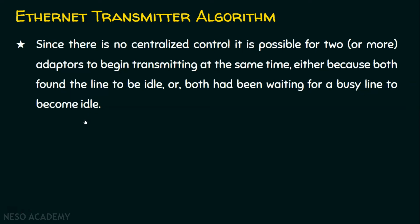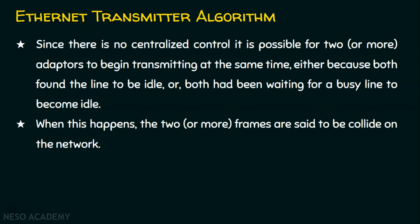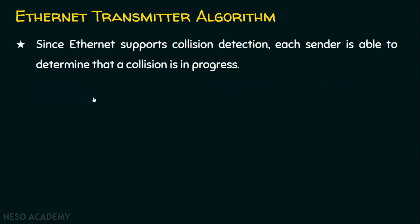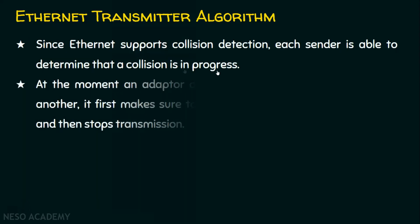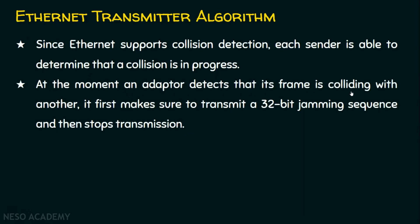When two or more host computers find the line to be idle and place their frames at the same time, the frames collide on the network. Since Ethernet supports collision detection, each sender is able to determine that a collision is in progress. When an adapter detects that its frame is colliding with another frame, it first transmits a 32-bit jamming sequence.